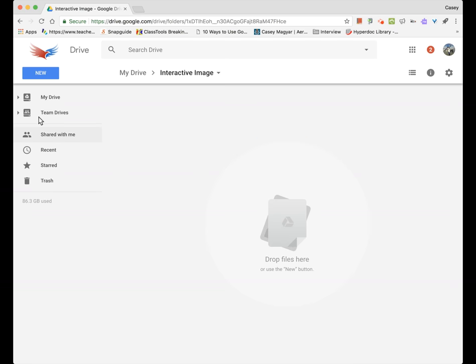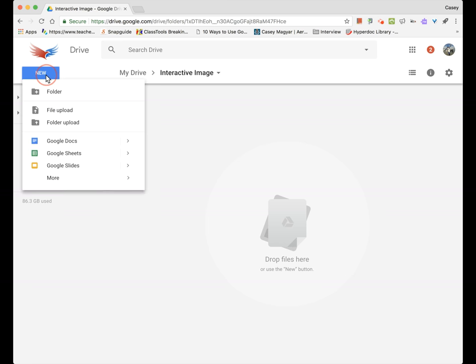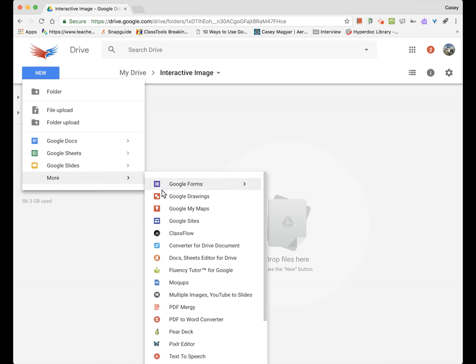First, start by opening a new Google Drawing in Google Drive. In Google Drive, click on New, drop down to More, then Google Drawings.